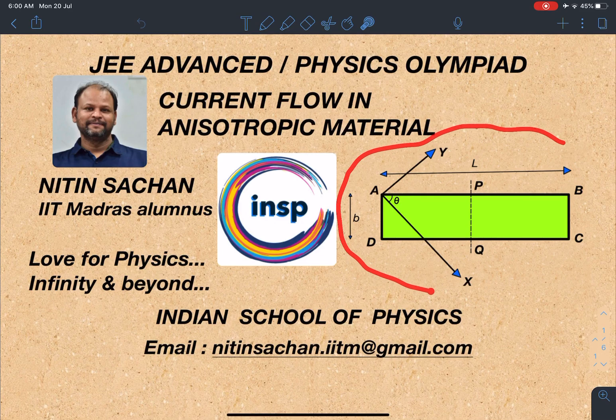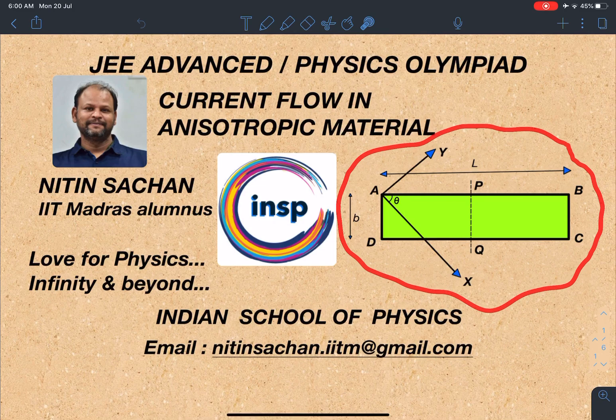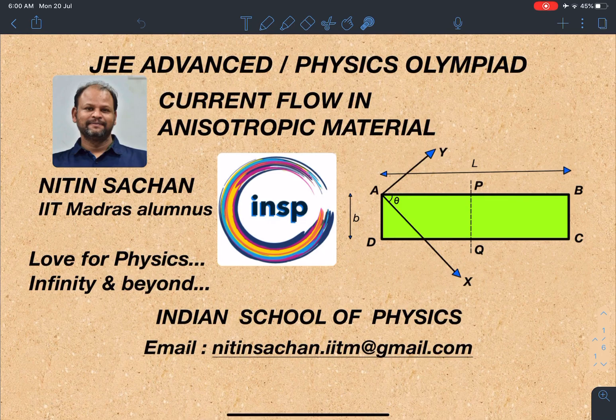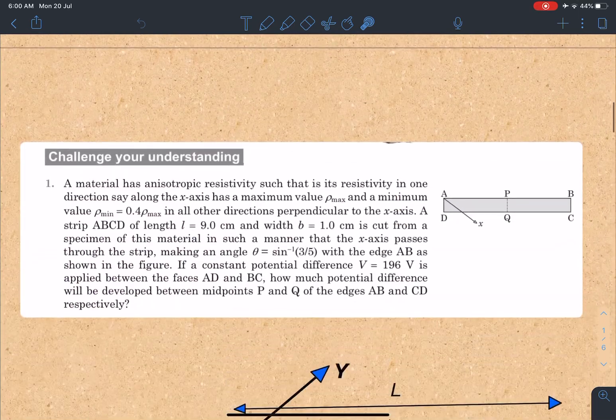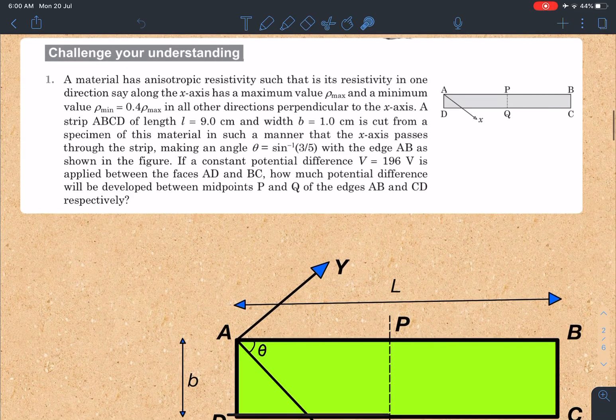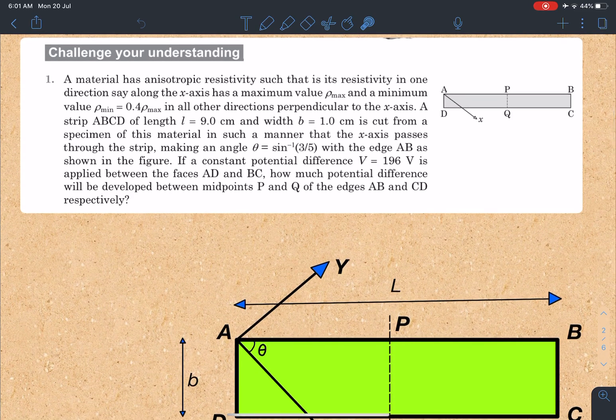This is from the section of challenge your understanding and it really challenges that. Let's discuss this problem. The statement says a material has anisotropic resistivity such that its resistivity in one direction, say along the x-axis, has maximum value and minimum value perpendicular to this. It's variable resistivity in different directions, however this is minimum in this plane and along this it is maximum.